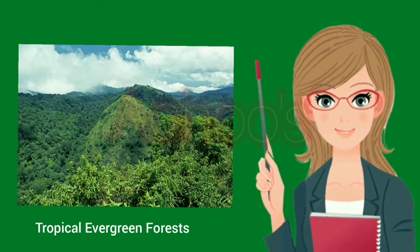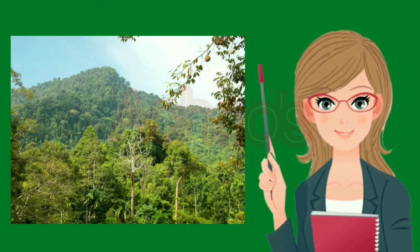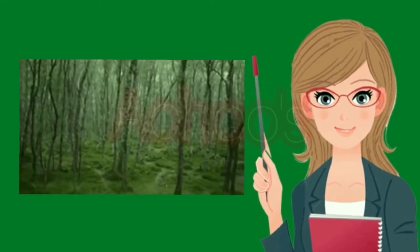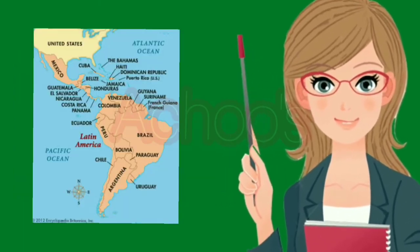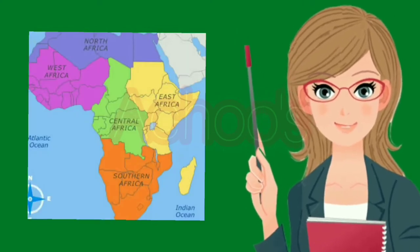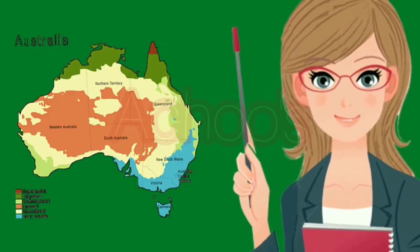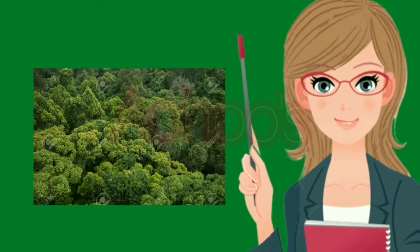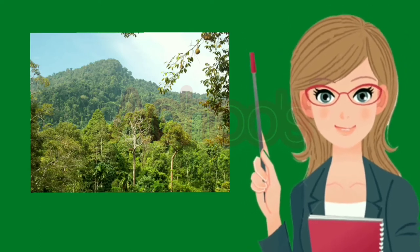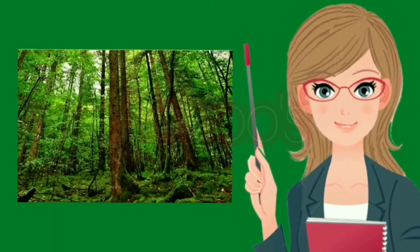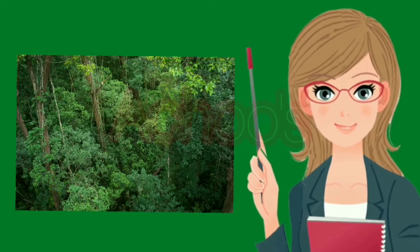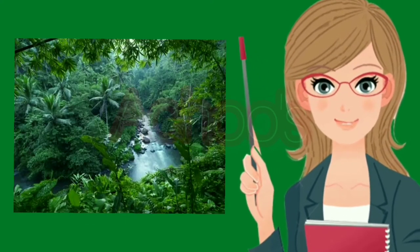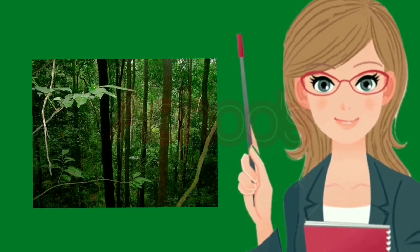The first one is the tropical evergreen forests, also called tropical rainforests. These forests are usually found in areas which are hot and receive heavy rainfall. They are found primarily in South and Central America, West and Central Africa, and parts of Southeast Asia and tropical Australia — mostly near the equator and the tropics. These forests are dense and multi-layered, harboring many types of trees and shrubs. The trees are mostly tall with an average height of more than 60 meters, and there is a thick undergrowth of plants and creepers due to heavy rainfall.